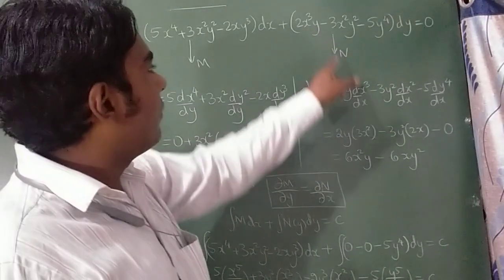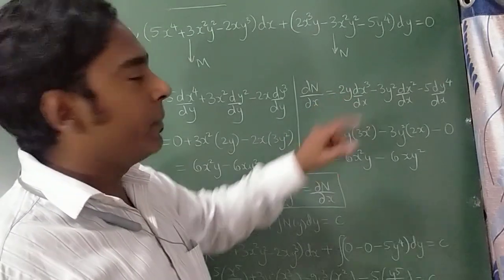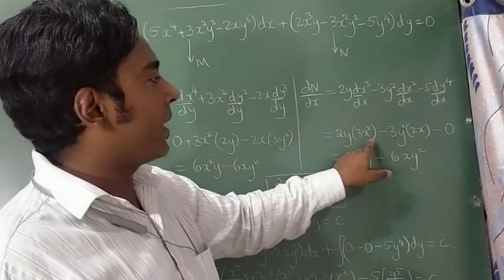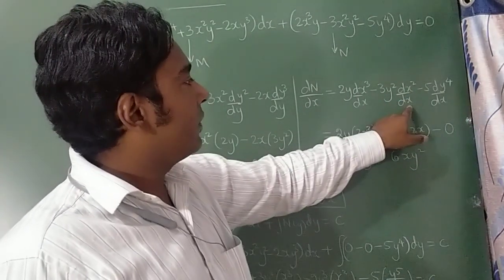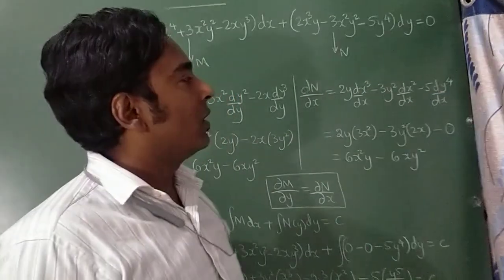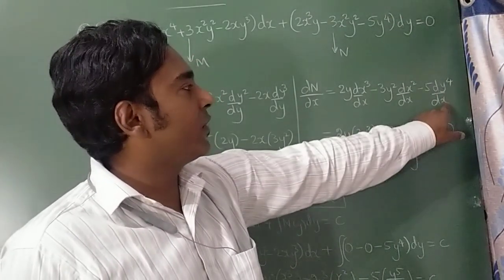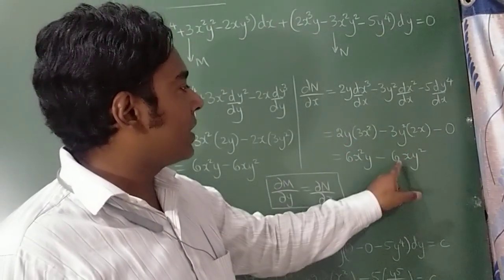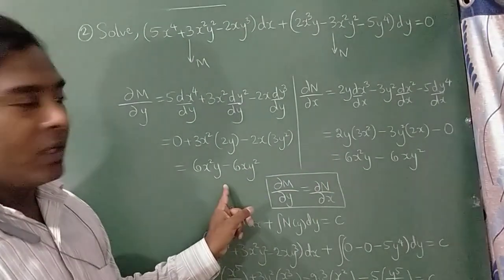For N, differentiating with respect to x: 2y is constant, differentiating x³ gives 3x², -3y² remains constant, differentiating x² gives 2x, and since the last term has no x it gives zero. Result: 6x²y - 6xy². Both ∂M/∂y and ∂N/∂x are equal, confirming this is an exact equation.